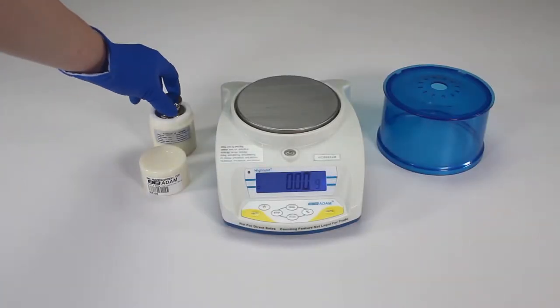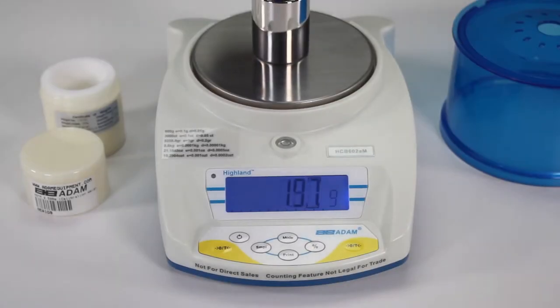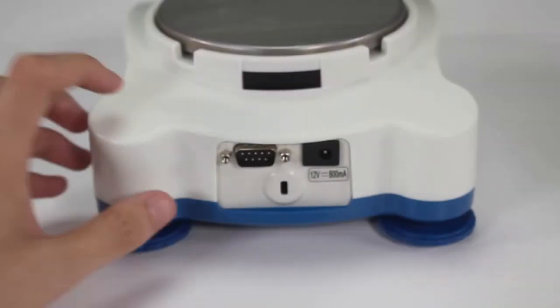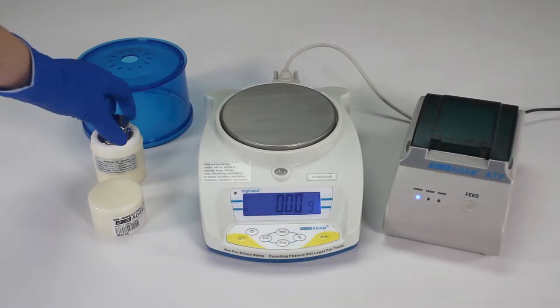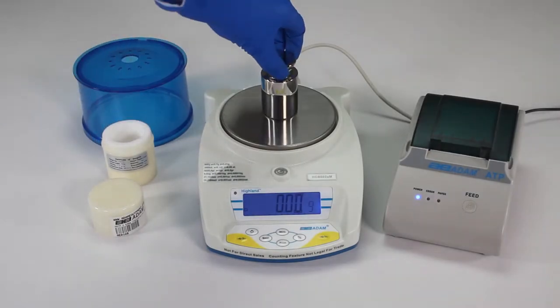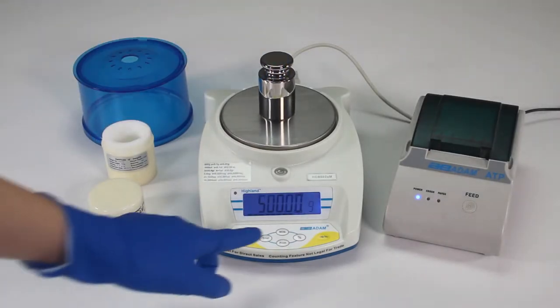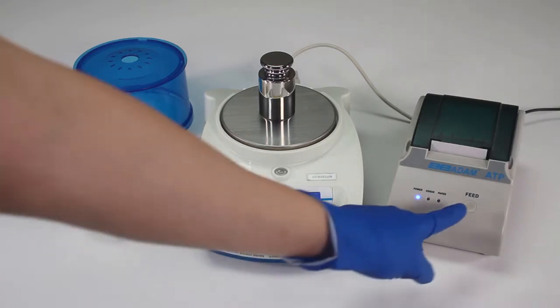Approved Highland models are available with capacities up to 5000 grams. Data communication is easy with the included RS-232 and USB interfaces. This means you can quickly transmit your results to printers or computers.